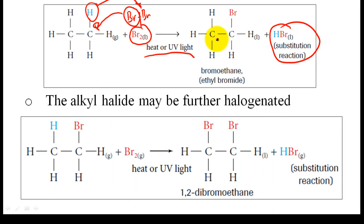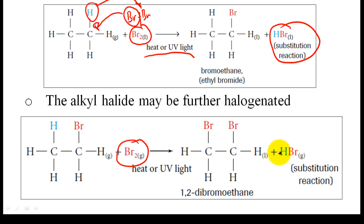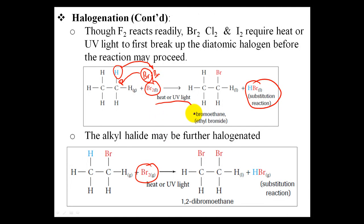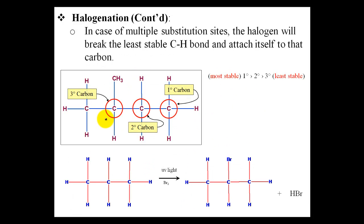Furthermore, the alkyl halide can be further halogenated by adding excess bromine. If you add more bromine gas, you can continue to tack on more bromines around the carbon, substituting hydrogen for bromine as you go along, creating more hydrobromic acid in the process. This becomes a question when there are multiple bond sites where the halogen could be attached — where does it go?